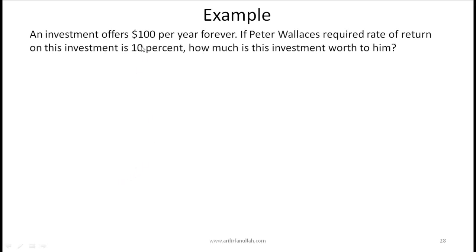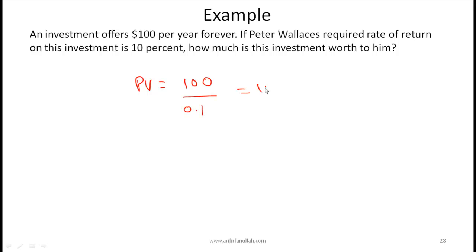Quick example: an investment offers $100 per year forever, and the required rate of return is 10%. The present value is 100 ÷ 0.1, which equals $1000.